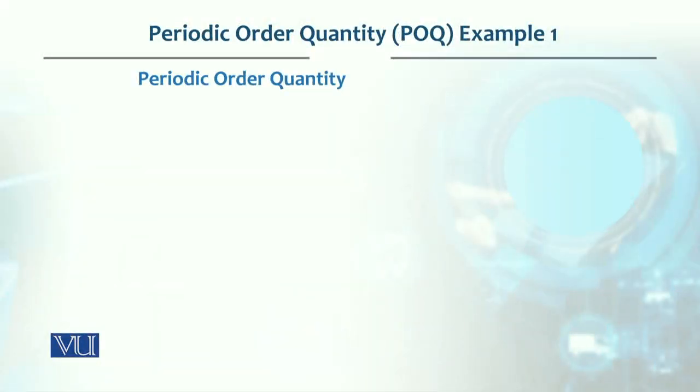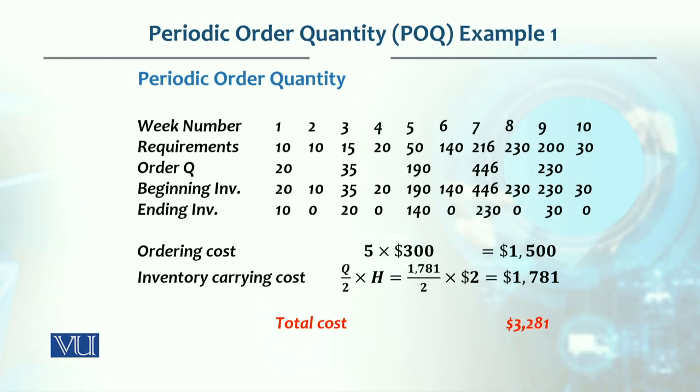If we calculate on this basis, in the first week we place an order for weeks 1 and 2, totaling 20 units. We combine weeks 3 and 4, ordering 35 units. In the fifth week we order 190 units, combining 50 and 140. In the seventh week we order 446, and in the ninth week we order 230.